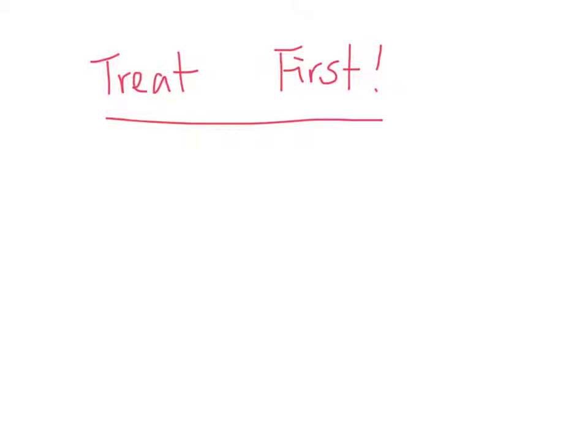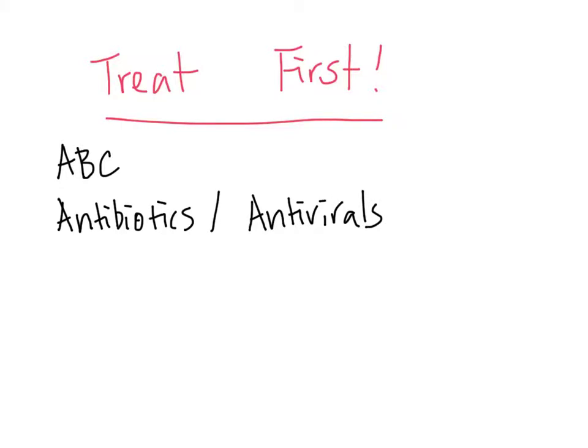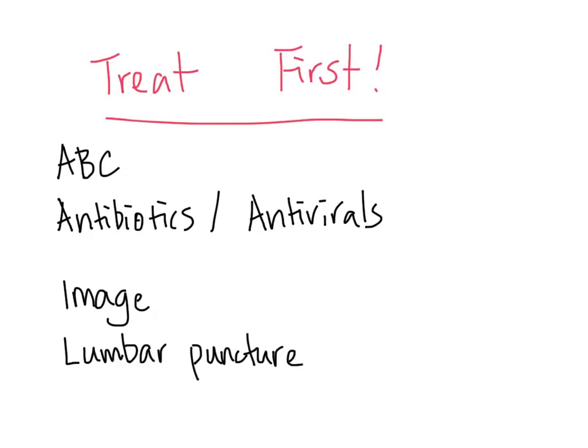In summary, we discussed the investigation and treatment of patients with suspected meningitis and encephalitis. Remember, we always treat before we investigate. Treatment includes attending to the patient's ABCs, antibiotics for meningitis, and antivirals for encephalitis. For investigation, we may have to image patients who have focal neurological findings or decreased level of consciousness, and the main diagnostic tool is a lumbar puncture. We hope this has been a useful overview. Thank you for watching.